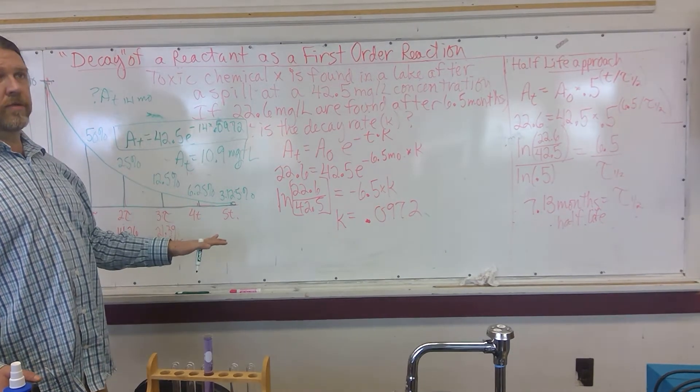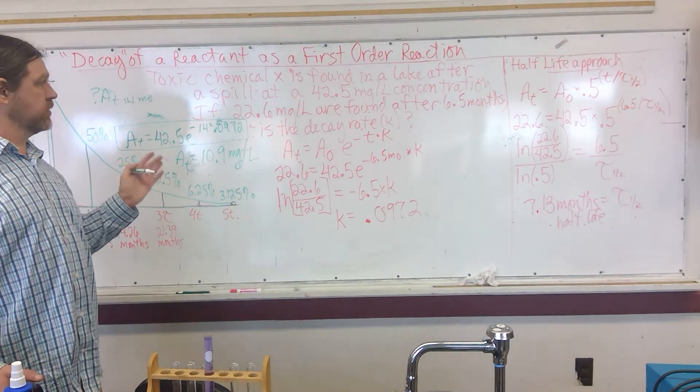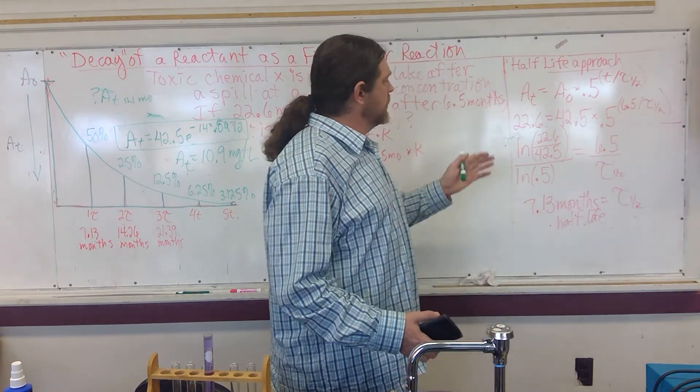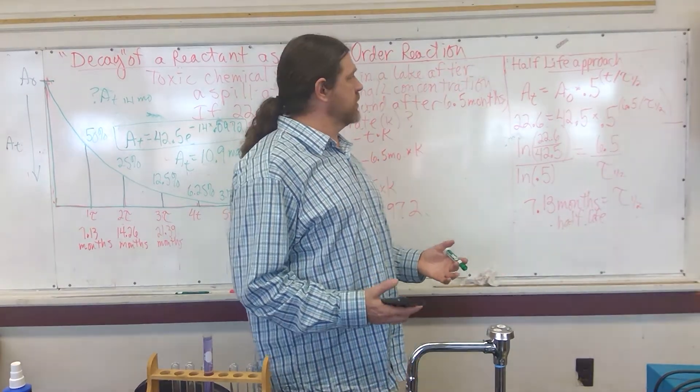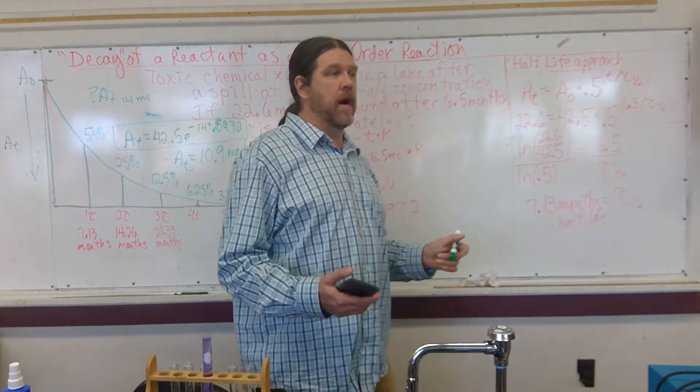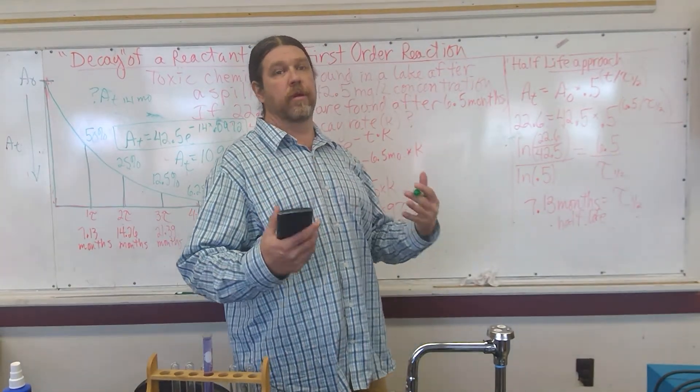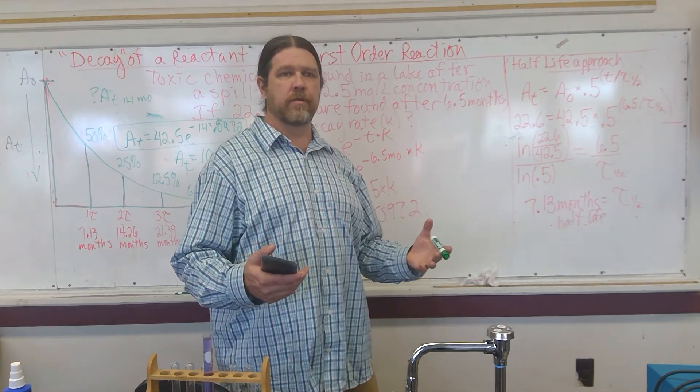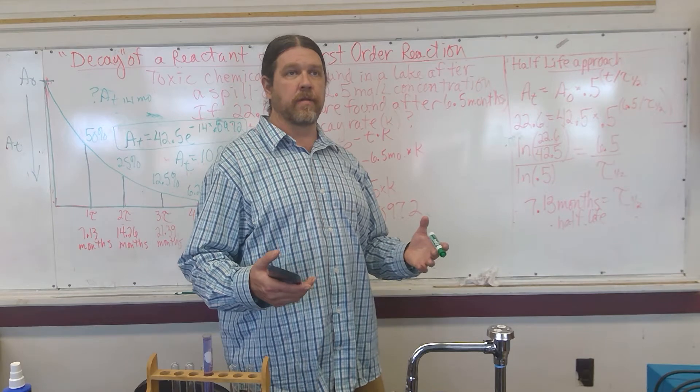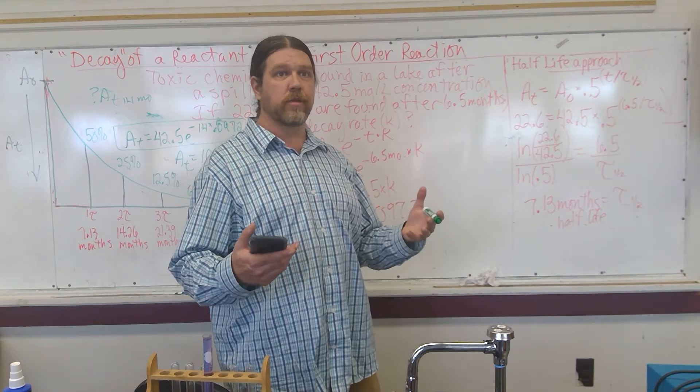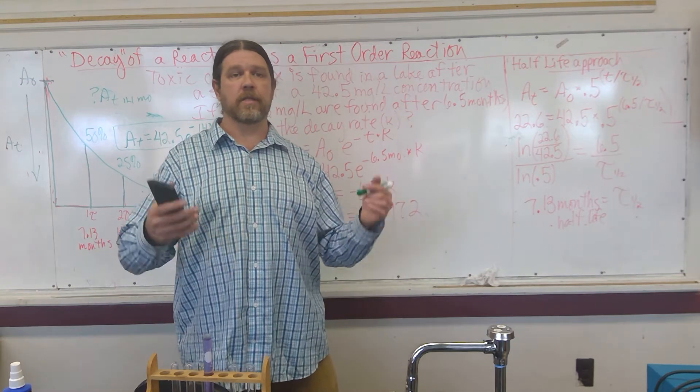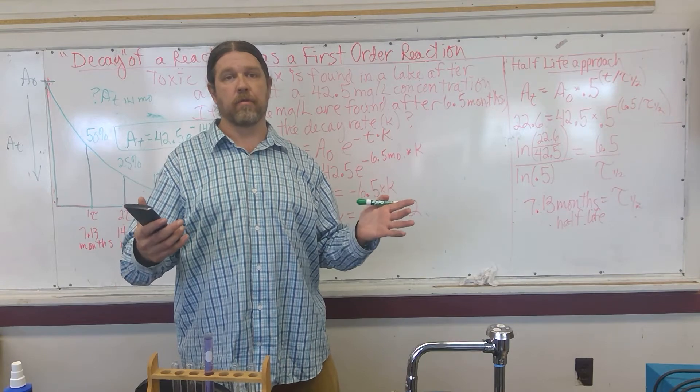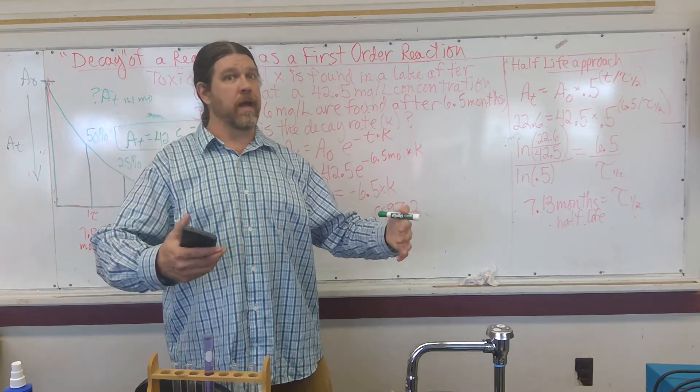So that is one approach looking at first-order decay. The other one is the half-life approach, and this is kind of like pH. When scientists decided to kind of use this type of modeling, it's easier for regular folks to understand. Like in pH, we can say, oh wow, this stream is one times 10 to the negative three power molar concentration of hydrogen ions. Man, that's not good. That's kind of hard to relate to, but if I say, hey, this stream is so acidic, it's got a pH of three, people can kind of grasp that order of magnitude.